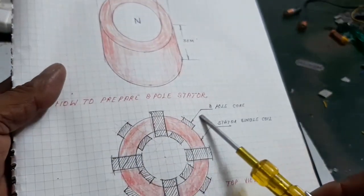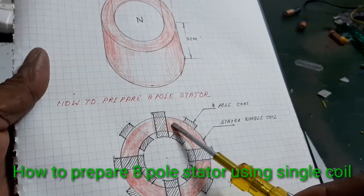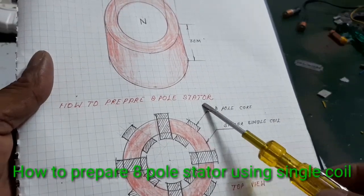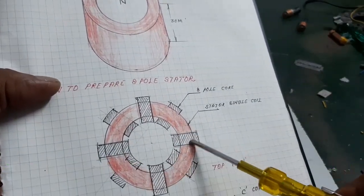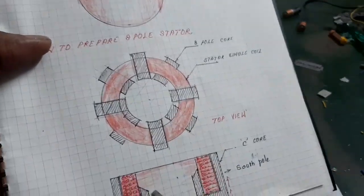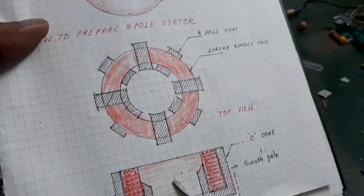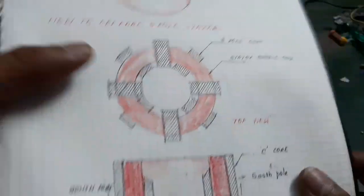Here, how to prepare the 8-pole stator by using a single coil. Look at this - this is the coil top view and this is the front view of the stator.